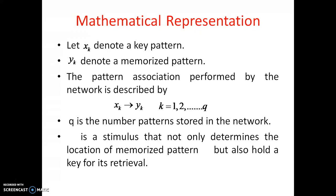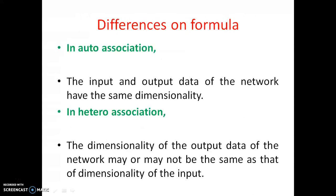After repeatedly giving inputs to the network, the network stores something — that stored something is the memorized pattern yk. Now when we present xk, the network retrieves yk. So xk is called the key pattern or stimulus. xk not only determines the location of the memorized pattern but also holds the key for its retrieval — both pieces of information are kept in xk.